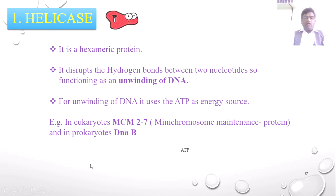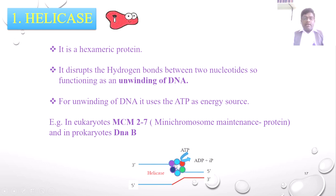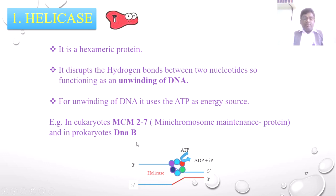Helicase is a hexameric protein having 6 different subunits. It plays an important role in unwinding DNA by breaking hydrogen bonds, using ATP as energy and NAD as cofactor. In eukaryotes it is called MCM 2 to 7 — mini chromosome maintenance — attached to a small part of the chromosome. In prokaryotes the function of helicase is carried out by DNA-B. The function of helicase is like a zipper — opening gives two different strands and produces the fork-like structure.